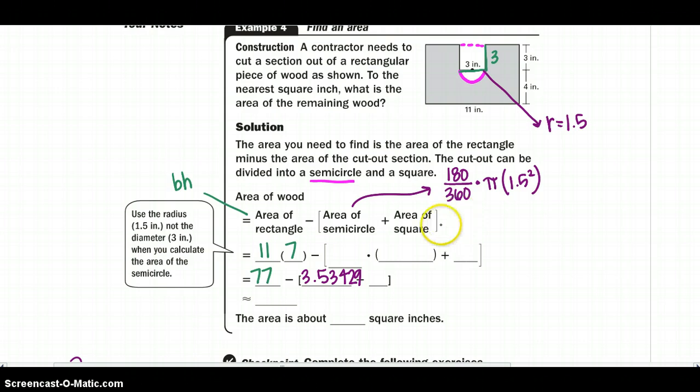And then I'm going to find the area of my square. And I know my area of my square is 3 squared or side squared. So that would be 9. So I'm going to finish that equation. And I would say this is going to be approximately 64.47 square inches what will be left when I have cut out my piece.